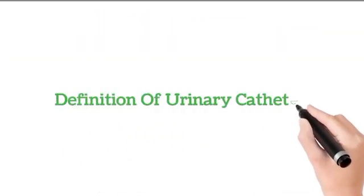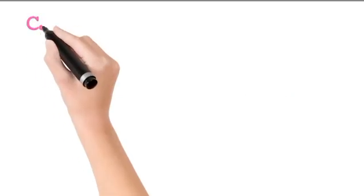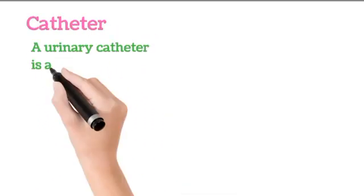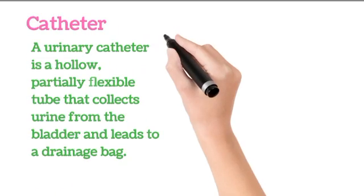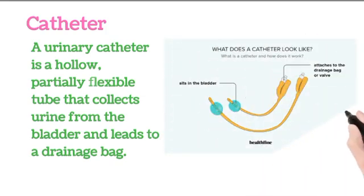Definition of urinary catheter: A urinary catheter is a hollow, partially flexible tube that collects urine from the bladder and leads to a drainage bag.